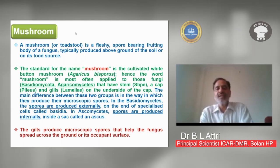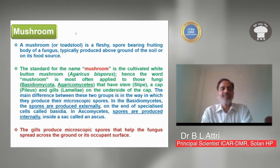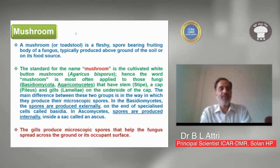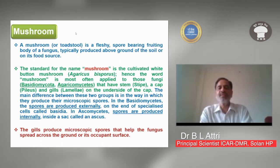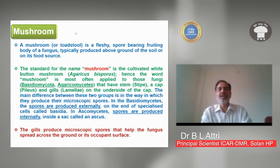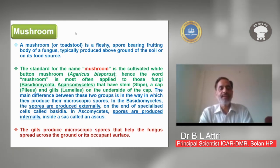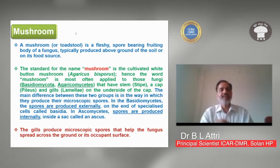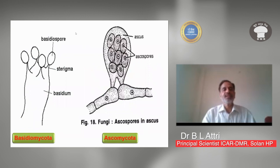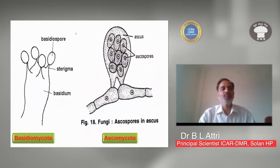The word mushroom is most often applied to those fungi — Basidiomycota and Agaricomycetes — that have a stem called a stipe, a cap called a pileus, and gills on the underside of the cap. The main difference between the two groups is how they produce microscopic spores. In Basidiomycetes, spores are produced externally on specialized cells called basidia, whereas in Ascomycetes, spores are produced internally inside a sac called an ascus. The gills produce microscopic spores that help the fungus spread.